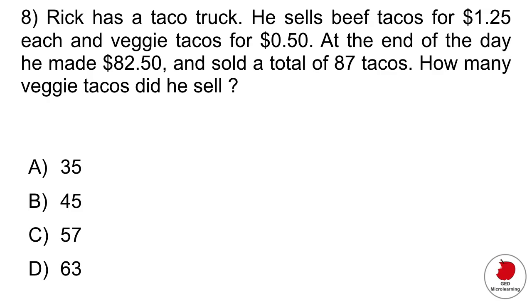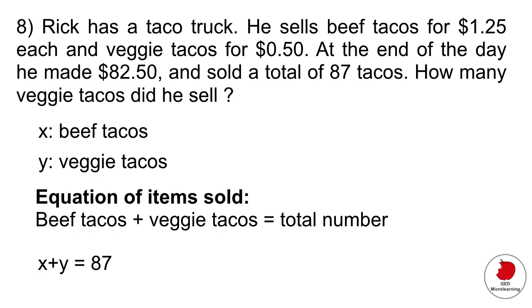Rick has a taco truck. He sells beef tacos for $1.25 each and veggie tacos for 50 cents. At the end of the day, he made $82.50 and sold a total of 87 tacos. How many veggie tacos did he sell? This is one of these system of equation problems, which I've noticed that a lot of you don't like, so that's why I've put it in. This involves you doing writing two equations and then substituting one of those equations into another equation. So first of all, let's determine our variables. We're going to say that the beef tacos are called X and the veggie tacos are Y. So if we do an equation of the total number of items sold, we would say beef tacos plus veggie tacos is equal to total number. In this case, we would say X plus Y is equal to 87.